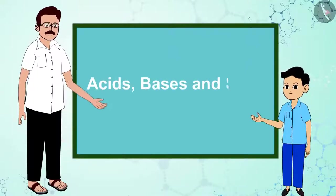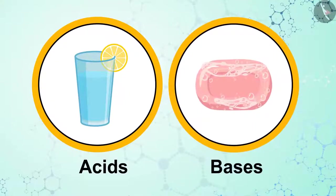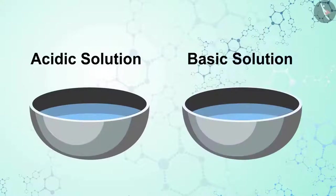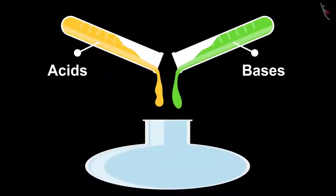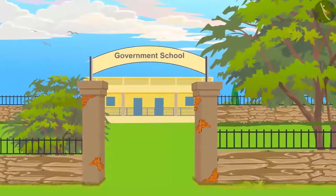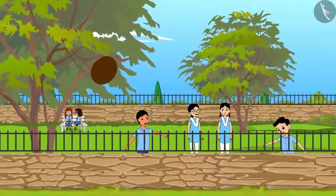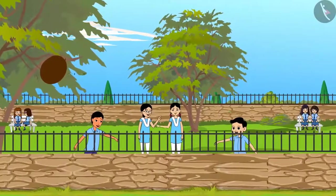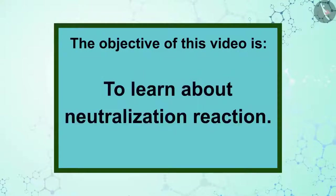Acids, bases, and salts — part three. Hello children! In the previous video you learned how to differentiate between acids and bases. As both acids and bases are generally colorless, indicators play an important role in differentiating the two. When acids and bases meet, what happens? Shall we go back to Raju? The objective of this video is to learn about neutralization reaction.